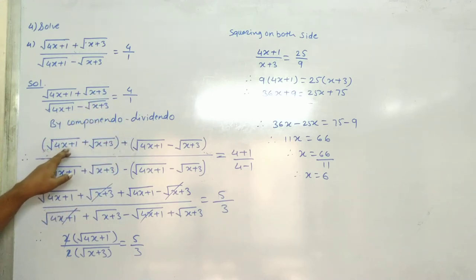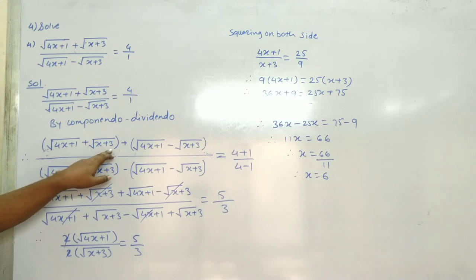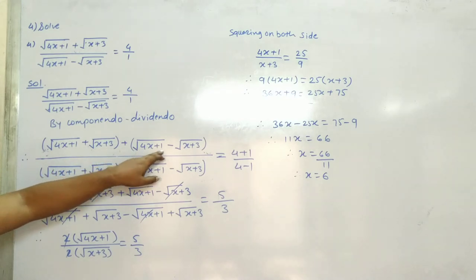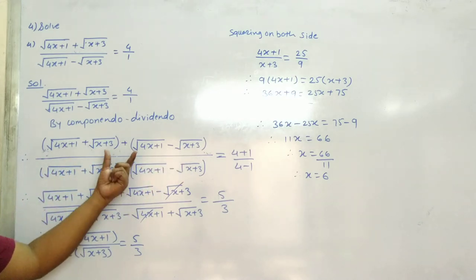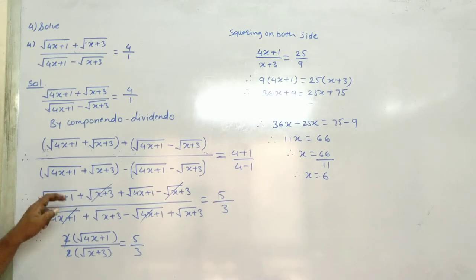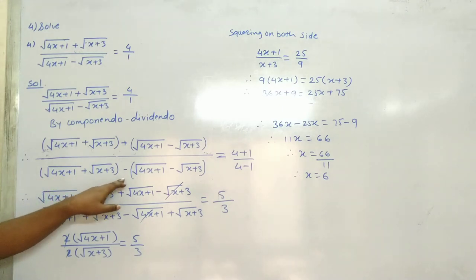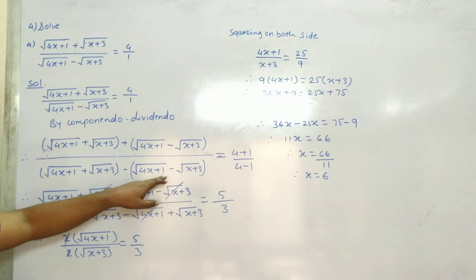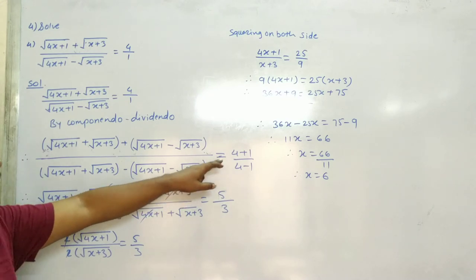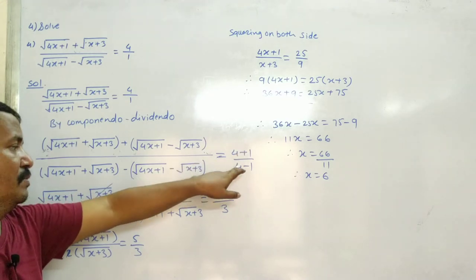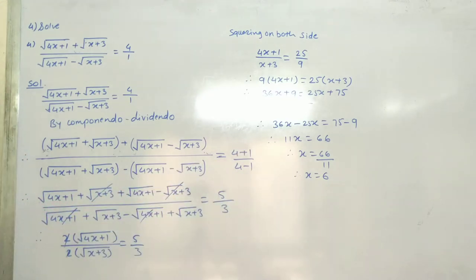Applying componendo dividendo: √(4x+1) + √(x+3) + √(4x+1) - √(x+3) over √(4x+1) + √(x+3) - (√(4x+1) - √(x+3)) is equal to 4+1 over 4-1.